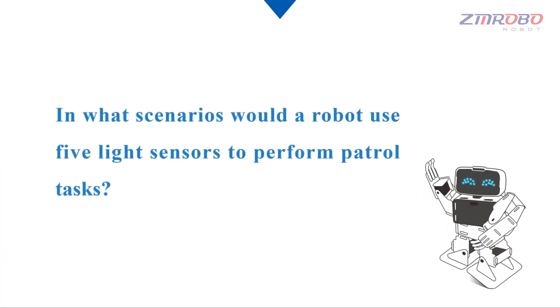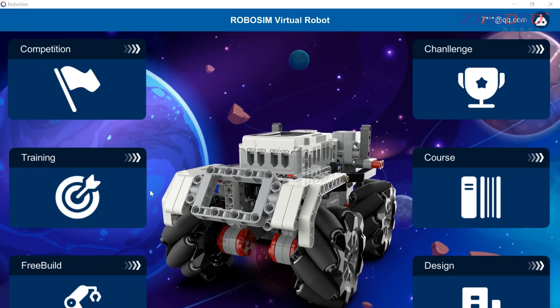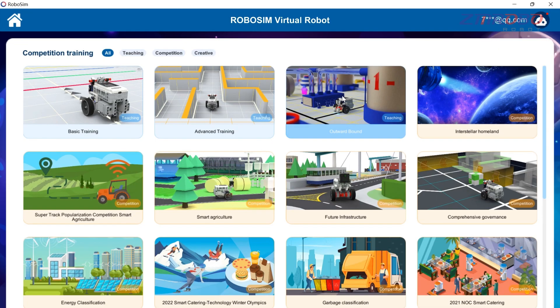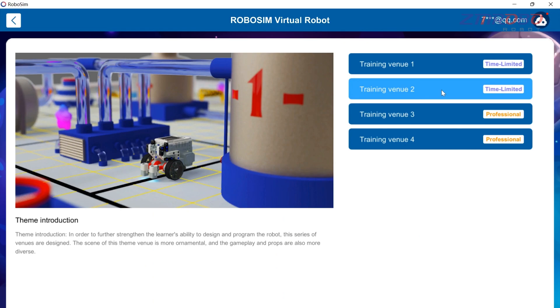First, we need to know in which scenarios the robot will use the 5 light sensors to patrol lines. We can first log in to the RoboSim software, click on training section on the homepage, then find the outward bound, select and click on training venue 2.